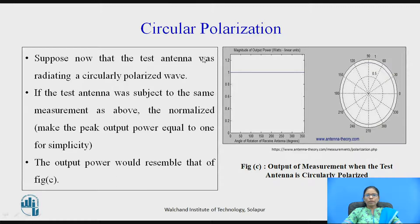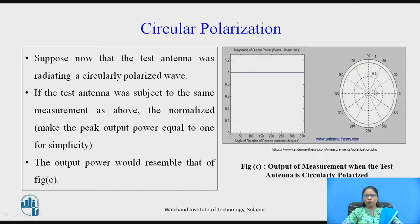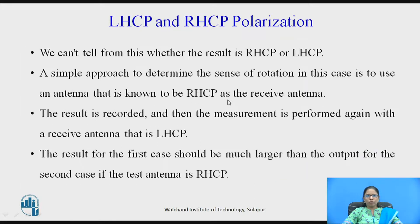For circular polarization, when the test antenna is circularly polarized and the receiving antenna is linearly polarized, we get a normalized output. If plotted on a linear scale it appears constant, but if plotted on a polar plot, we get a circular result. This circular polar plot indicates that the antenna is circularly polarized.